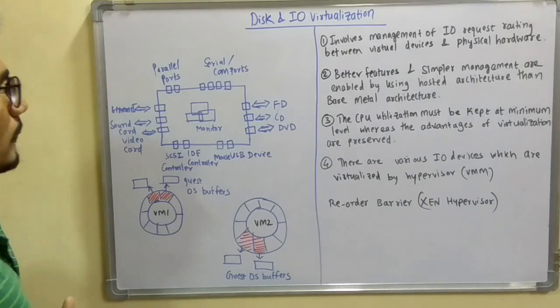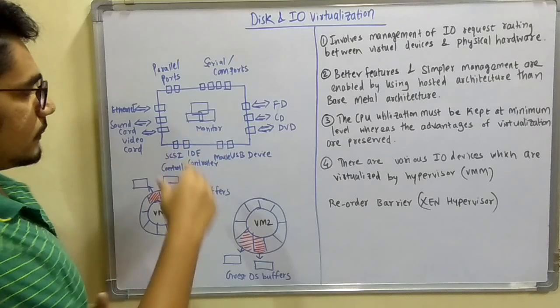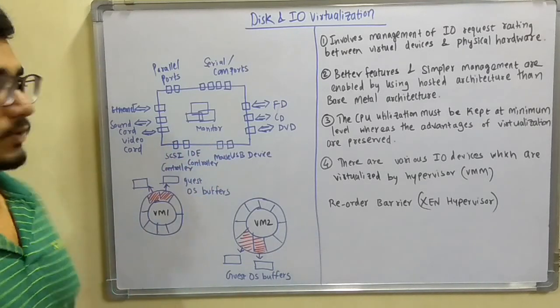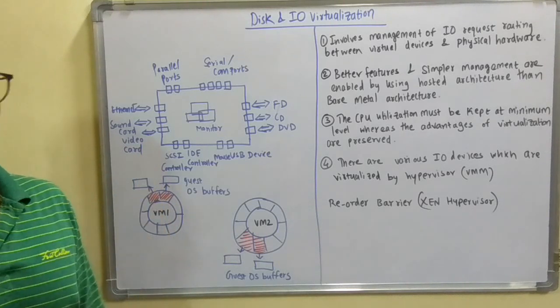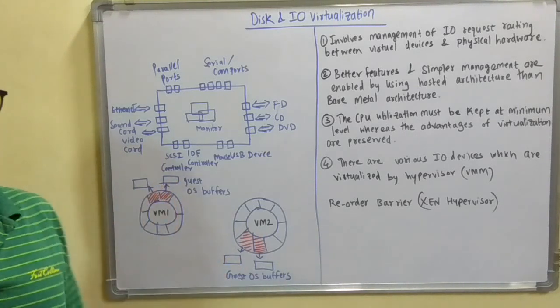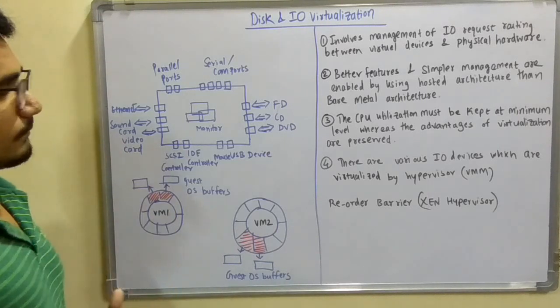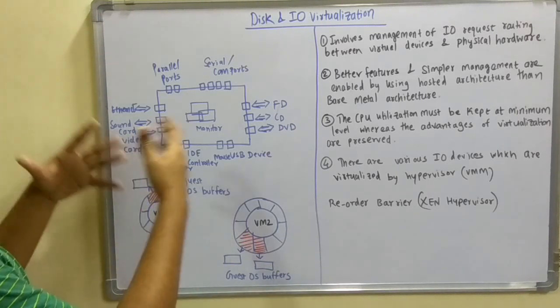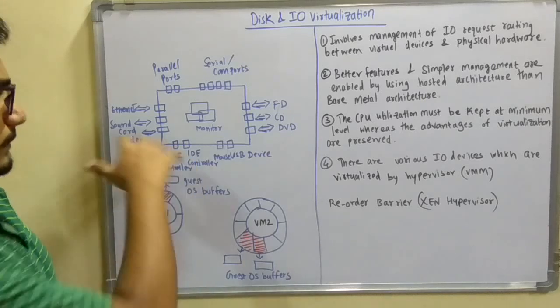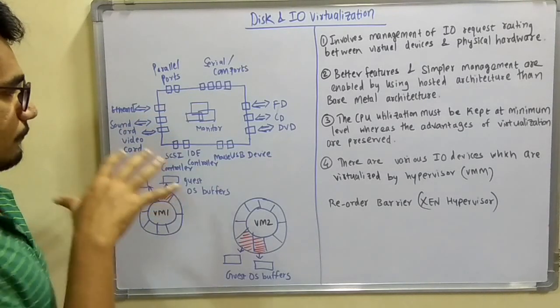These are all the components or ports supported for this disk and I/O virtualization. You can add more things like HDMI by elaborating this architecture even more. That's the generic diagram for I/O virtualization.